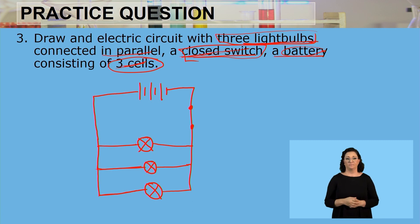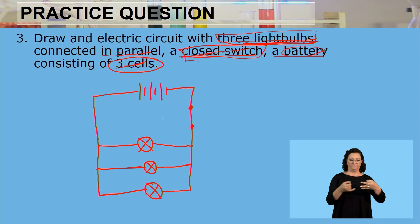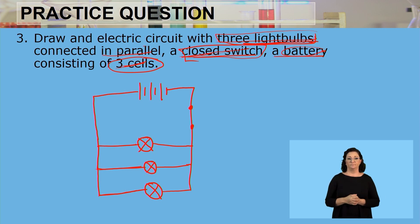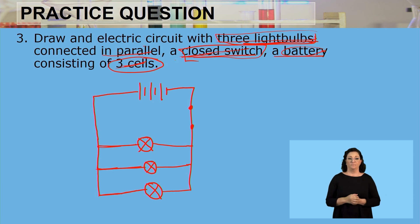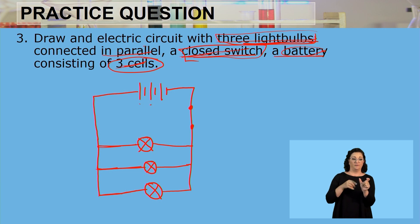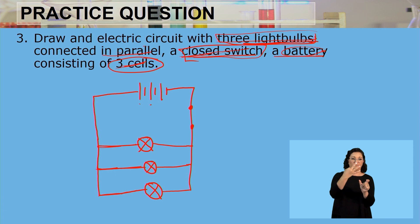So this is what we have: we have drawn the three light bulbs in parallel — one, two, three — there are three different pathways for the current to pass, and we have a closed switch, and a battery that has three cells. That takes care of our electric circuit. Before going to the next set of questions, let's quickly go for an air break, and I will see you just after this.